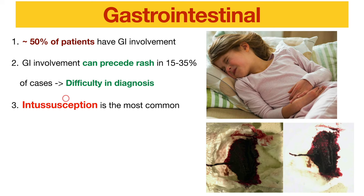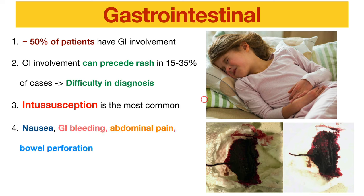The patient may feel pain in the tummy and can have PR bleeding. The most classical description is recurrent jelly-like stool. It is very important to recognize because we need to consult a surgeon. Other presentations include nausea, GI bleeding, abdominal pain, or more severe bowel involvement.